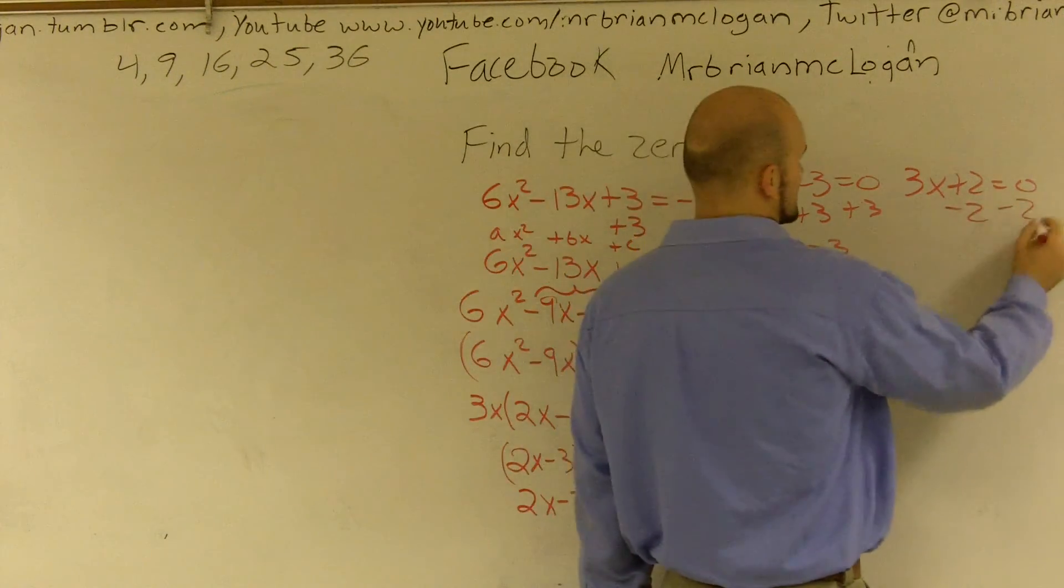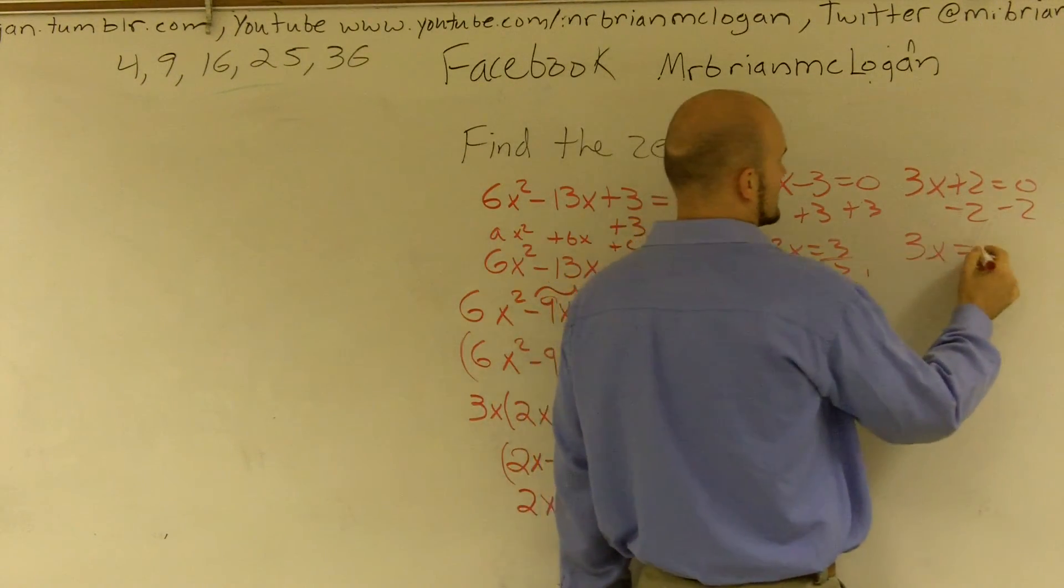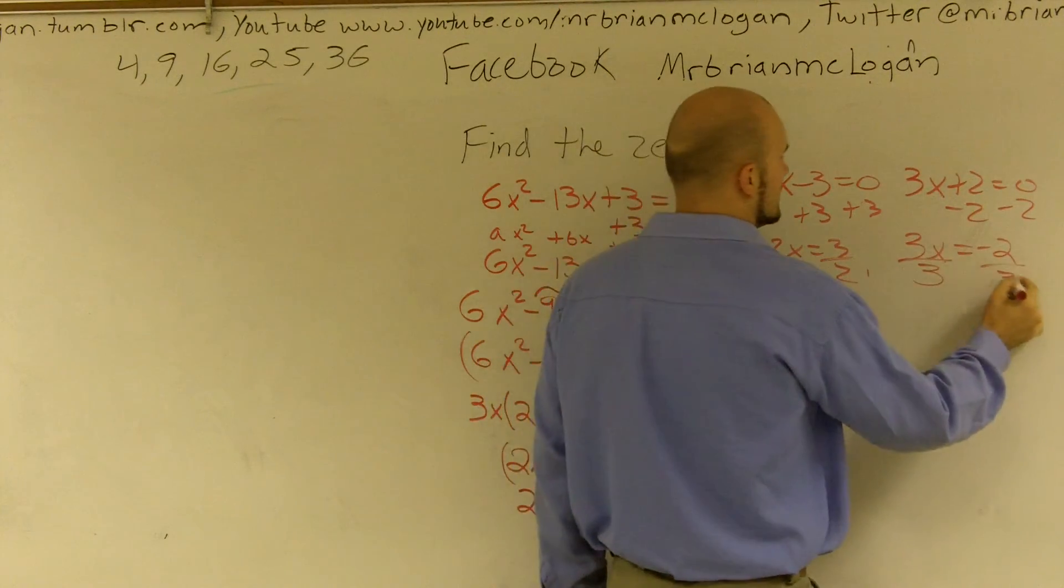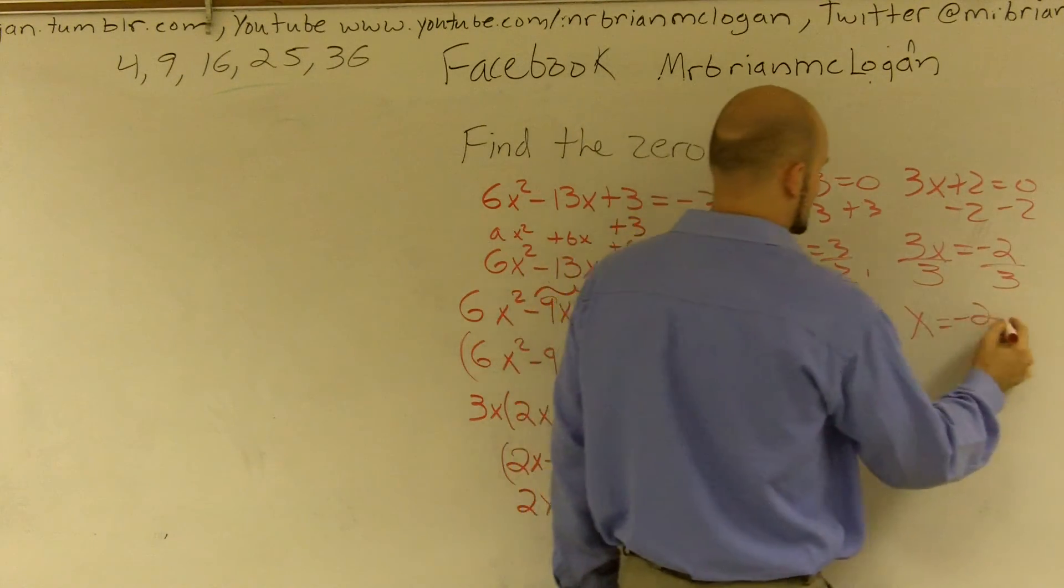Got to do this fast. I'm sorry. Subtract 2 on both sides. 3x equals negative 2. Then I divide by 3. x equals negative 2 thirds.